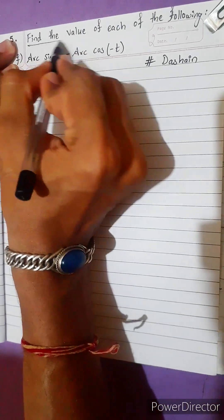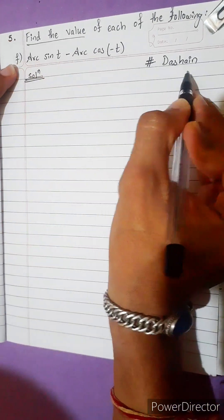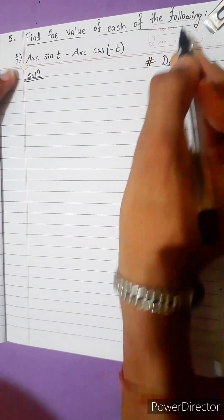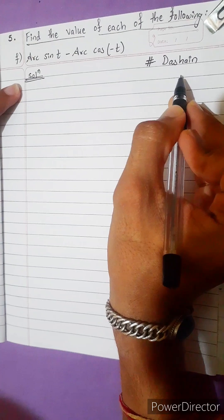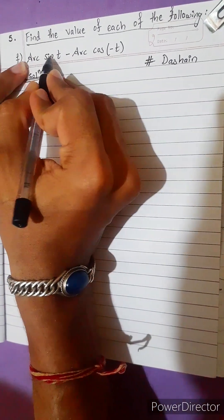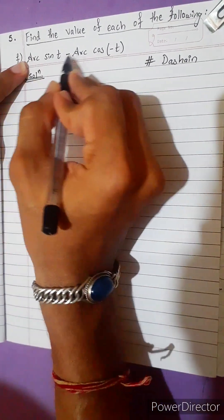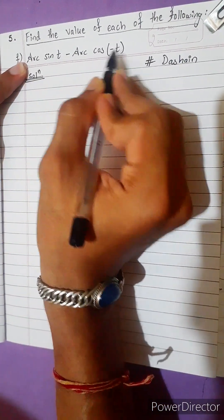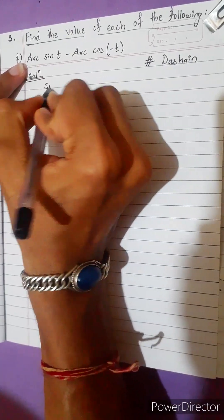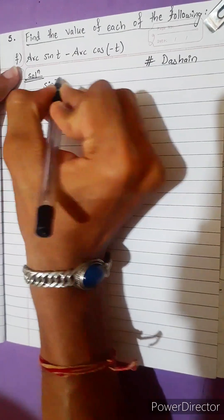This question asks for the value of f. It can be made by f, and here is arc sin(t) minus arc cos(-t). Arc — that is sin inverse.